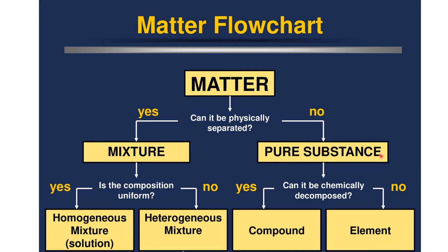For pure substances, we check whether it can be chemically decomposed or separated. Water is made up of hydrogen and oxygen — since we can separate them, water is a compound. But hydrogen cannot be separated further, so hydrogen is an element. This flowchart allows us to determine whether a given sample is a homogeneous mixture, heterogeneous mixture, a compound, or an element.